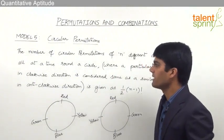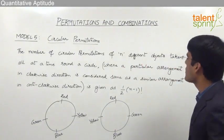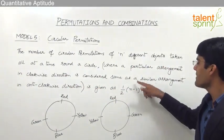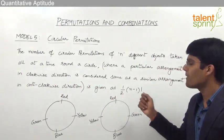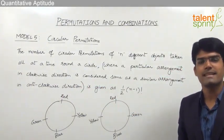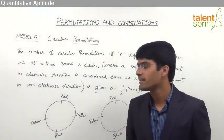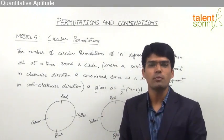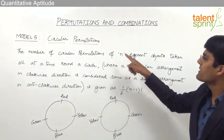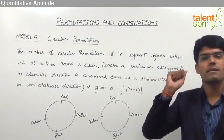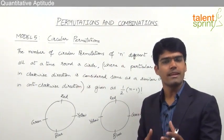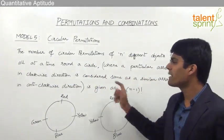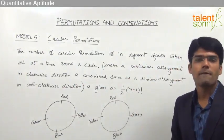The number of circular permutations of n different objects taken all at a time around a circle, where a particular arrangement in clockwise direction is considered the same as a similar arrangement in anti-clockwise direction, is given as half of (n-1) factorial. For example, if we have to make a bracelet using four different color beads — red, yellow, blue, and green — we take all four beads arranged around a circle, and the answer should be half of (n-1) factorial.